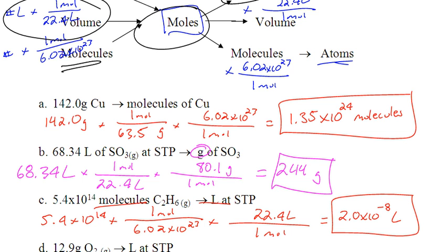142 grams of copper into molecules of copper. So you start with the number you're given, times line, get rid of grams by putting grams on the bottom. The molar mass of copper is 63.5. You want to cancel off grams, you have moles. But we don't want to end in moles, so we've got to cancel it off. Times line.